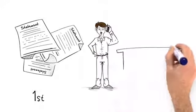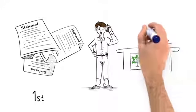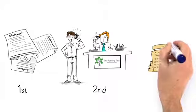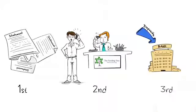Secondly, within minutes, the Funding Tree gave John an offer he couldn't refuse. So John accepted the offer. And thirdly, within 24 hours, the money was in his bank.